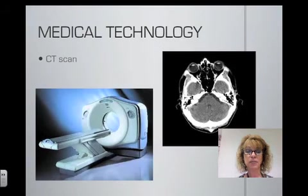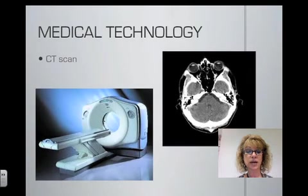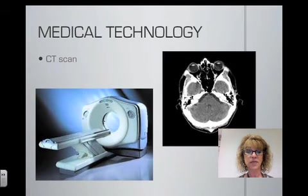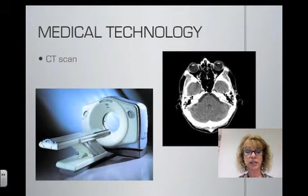A second type of medical technology for viewing internal structures is the CT or CAT scan, which stands for computed tomography. It is a type of x-ray that produces thin cross-sections of tissues and can be used to detect small differences between normal and abnormal tissues.